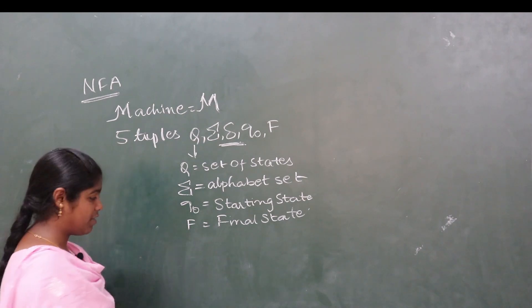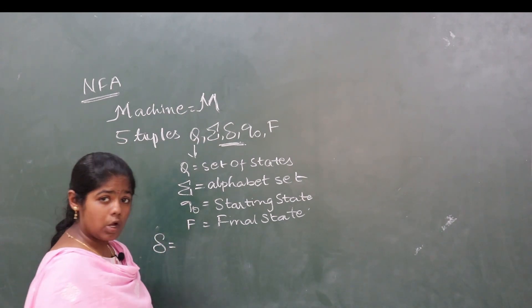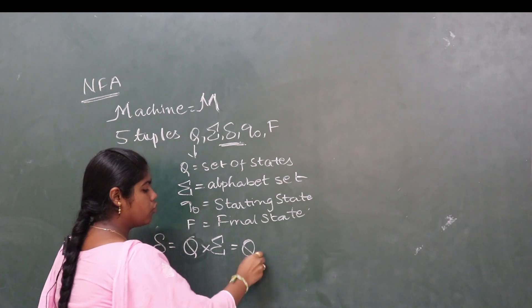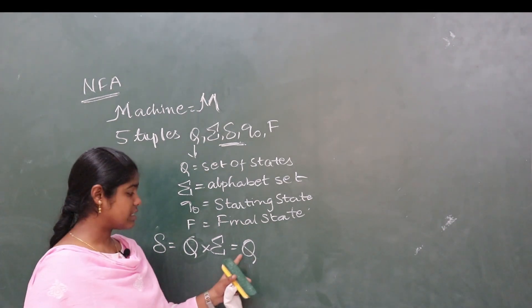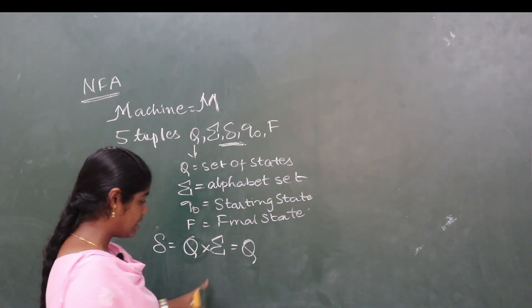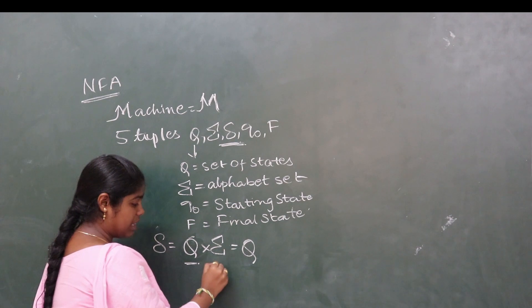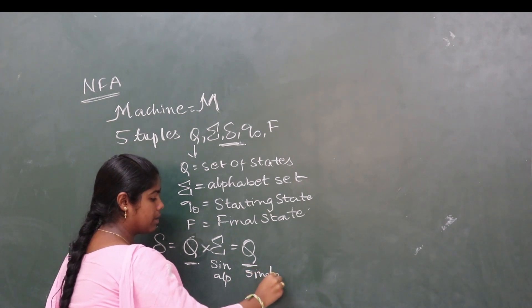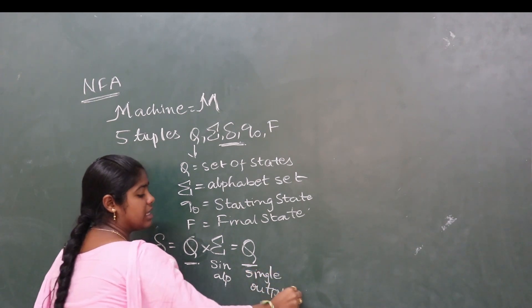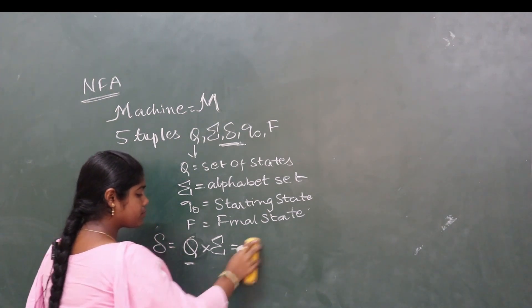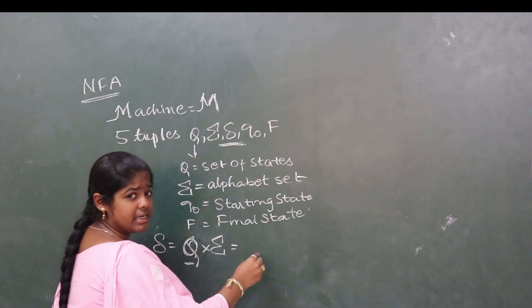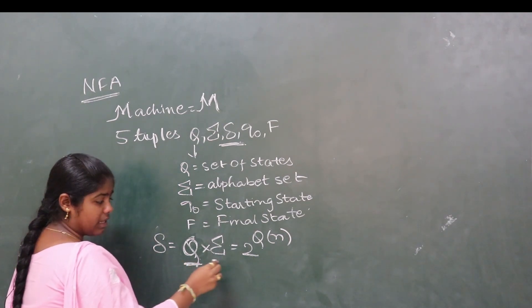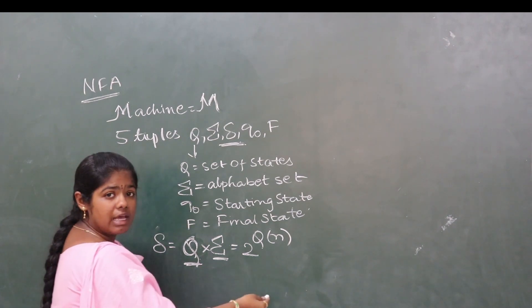The transition function is the difference. In NFA, the set of states into alphabet set equals the power set of set of states. From one state on one input alphabet, the transition can be to more than one state.